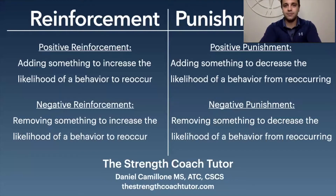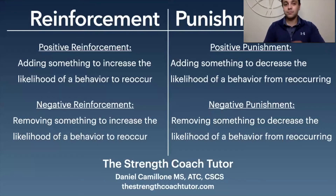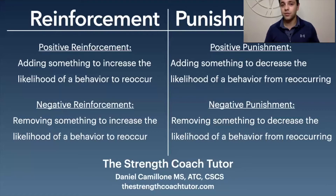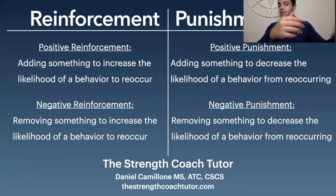Negative reinforcement is where you remove something to increase the likelihood of a behavior reoccurring in the future. For example, say you're running a workout and you have some extra conditioning or sprints planned at the end. The behavior you want to reinforce is giving 100% effort during the workout. So you tell them: because you gave such great effort today, I'm going to cancel those sprints and conditioning at the end — I'm taking that away. By removing it, you make it more likely that the athletes will give their best effort in the future.